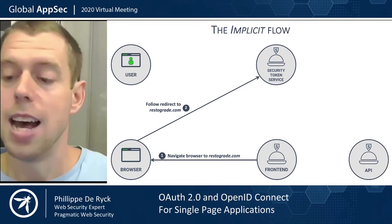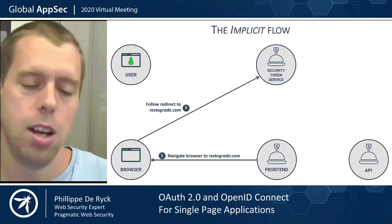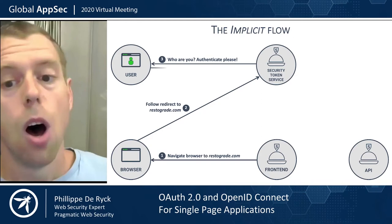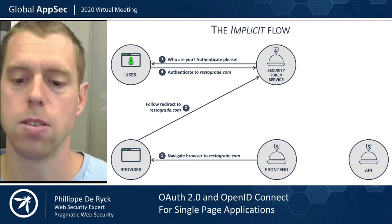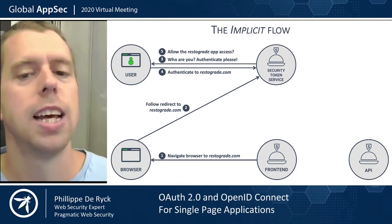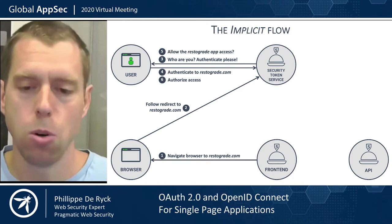The STS is going to decide: do I know who the user is? Do I have an existing session? If so, it can move forward, but typically it's going to have to authenticate the user. So it's going to show the user an authentication page. The user logs in with their RestoGrade credentials. The STS verifies that information, and if everything checks out, it now knows that the user authenticated. It might then check with the user if they're fine with sharing access with the RestoGrade front end application — asking if they want that application to act on their behalf to the API. The user authorizes that access.